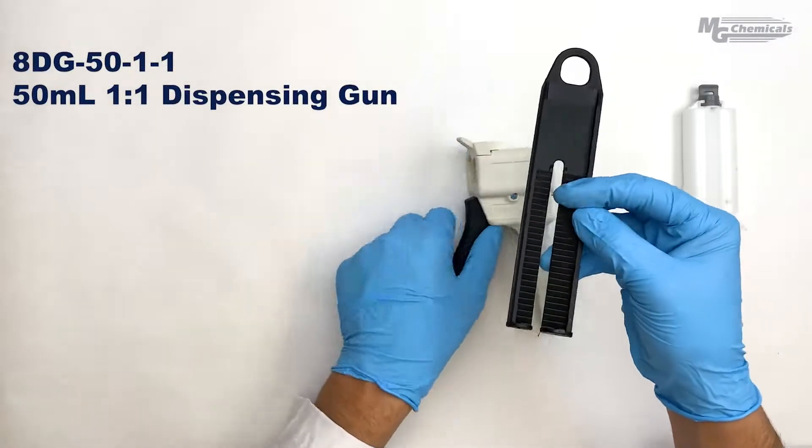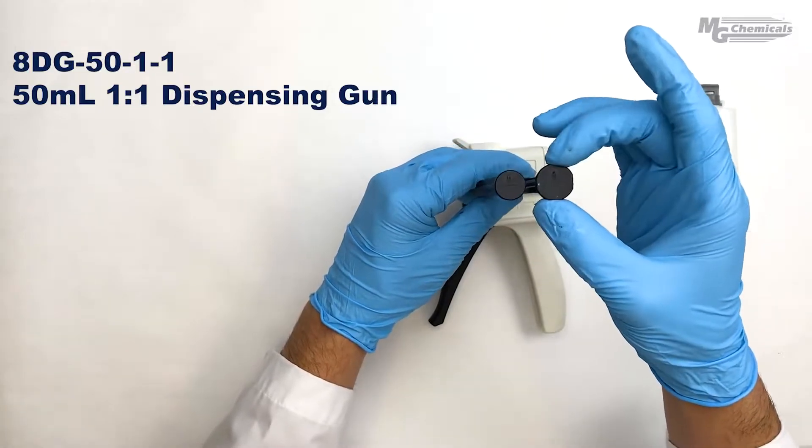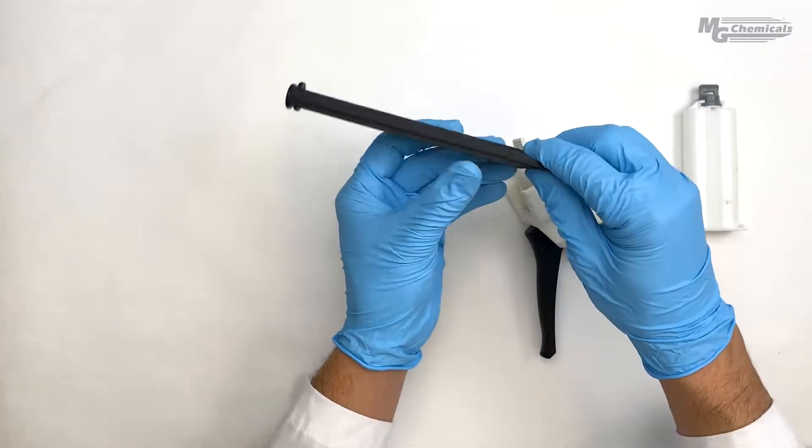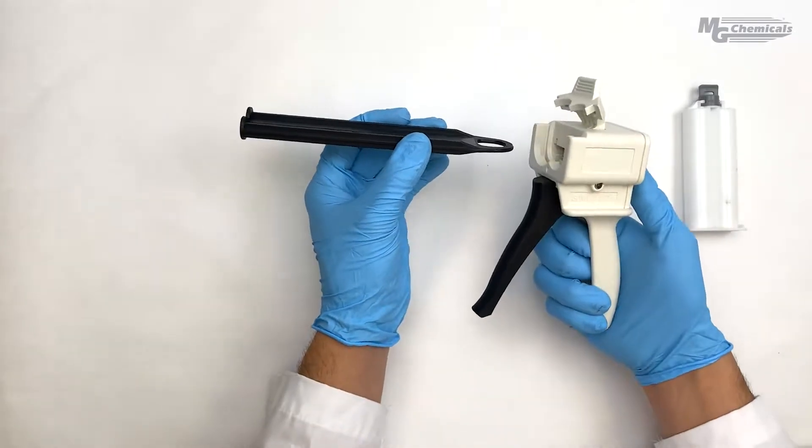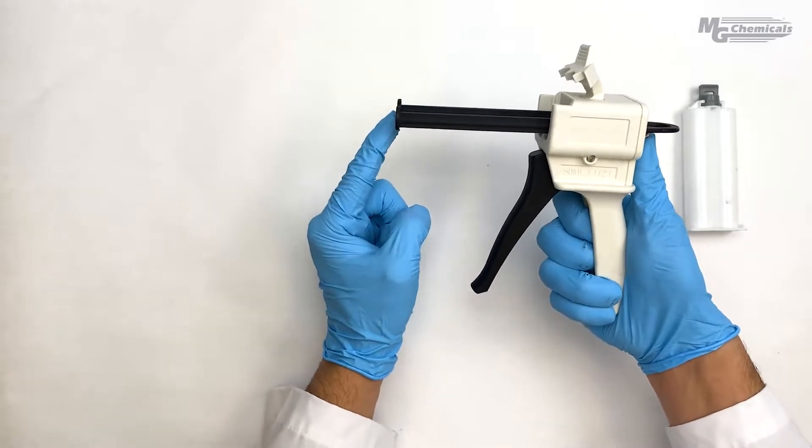Using our 8DG-50-1-1, we start by loading the pistons into the gun simply by lining up the tapered end into the center of the gun and sliding the pistons all the way in.